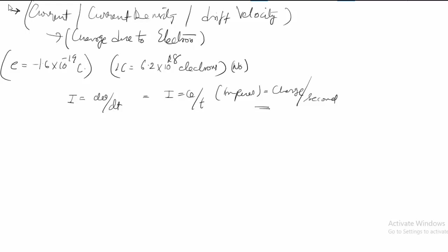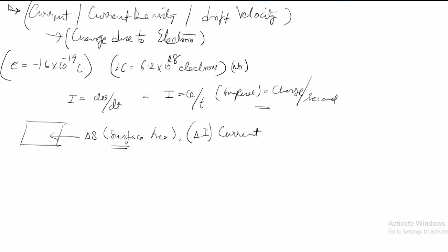Suppose you are considering a surface with a surface area of delta s. This is a unit surface area and you want to find delta i, the current flowing through this area. You can define the current density J as delta i divided by delta s, so delta i is equal to J into delta s.